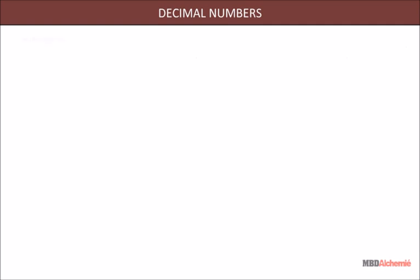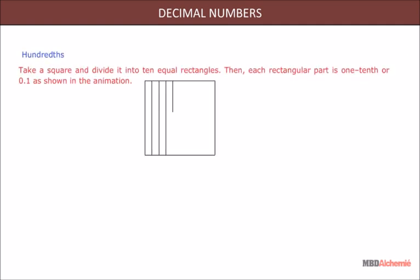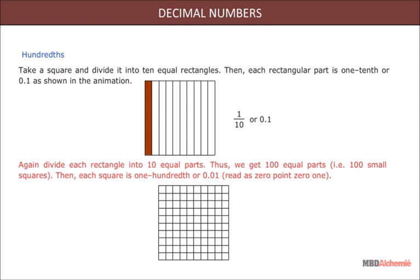Now, we will learn about hundredths. Take a square and divide it into ten equal rectangles. Then, each rectangular part is one tenth or 0.1 as shown in the animation. Again, divide each rectangle into ten equal rectangles. Then, each square is one hundredth or 0.01, read as zero point zero one.